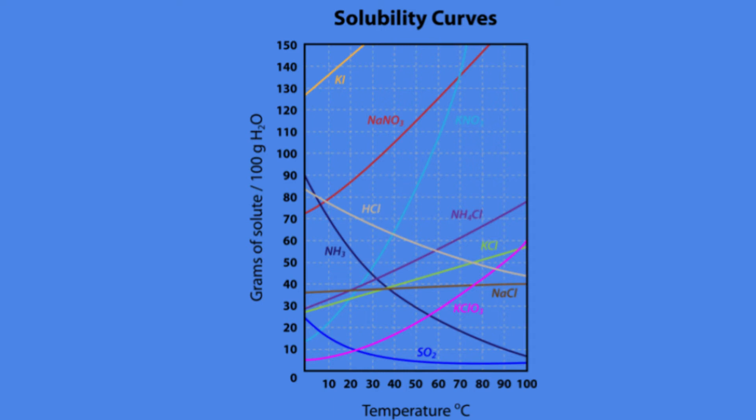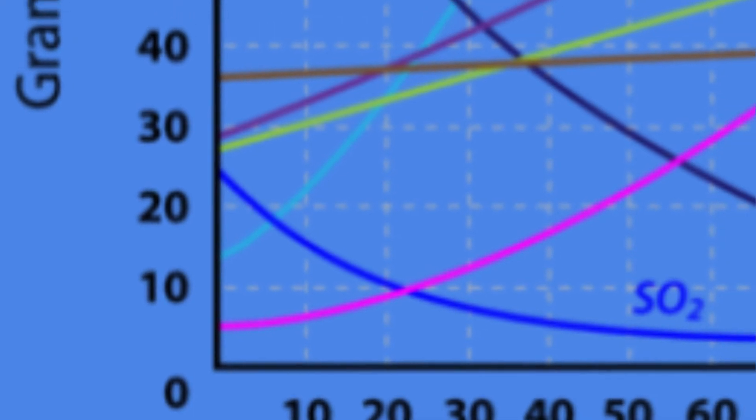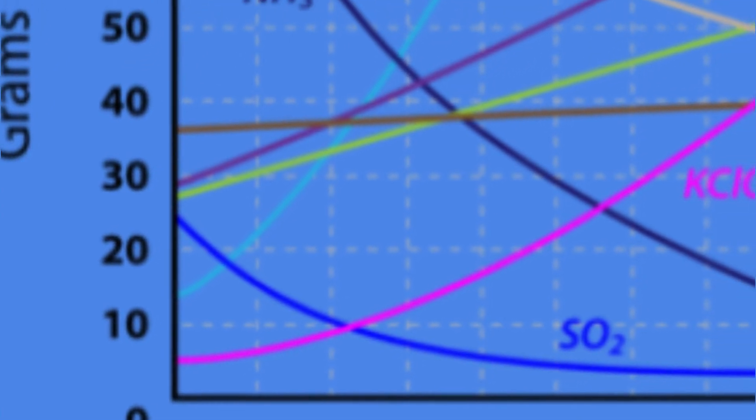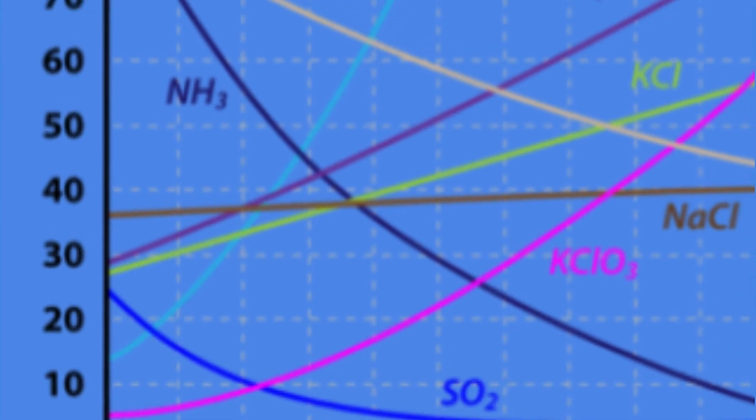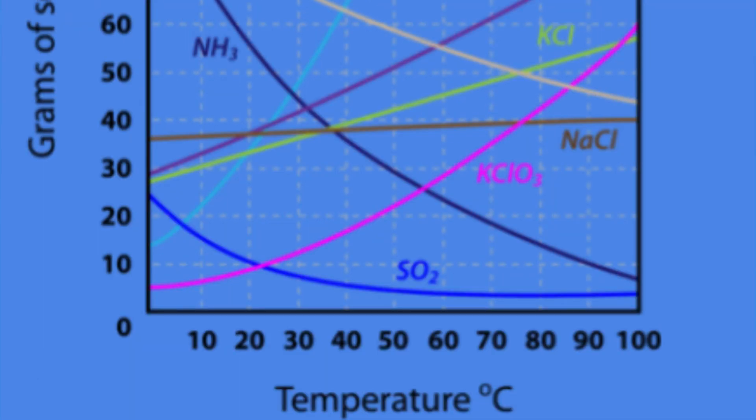As we move from left to right, we see that the amount increases a little bit. For instance, let's take a look at 40 degrees Celsius. As we go from 40 degrees Celsius, we move up along the y-axis and we see that about 40 grams is able to dissolve.